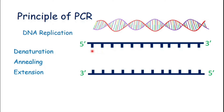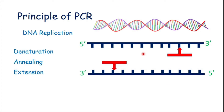In the first step, which is known as denaturation, both strands of DNA will become separate. This is made possible due to high temperature, which is about 90 to 95 degrees Celsius. In the second step, which is annealing, the primers will attach to their complementary sequence on both sides of both of the templates.